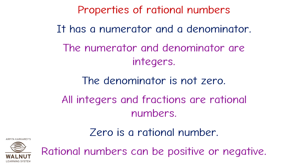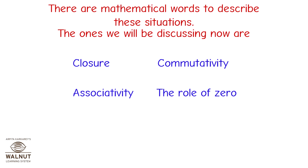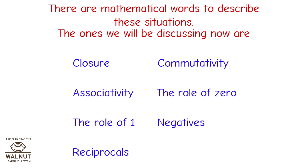We are now going to look at more properties of rational numbers — how they behave in different situations. There are mathematical words to describe these situations. The ones we will be discussing are: Closure, Commutativity, Associativity, the Role of Zero, the Role of One, Negatives, Reciprocals, and Distributivity.